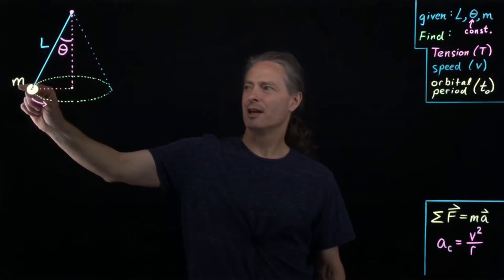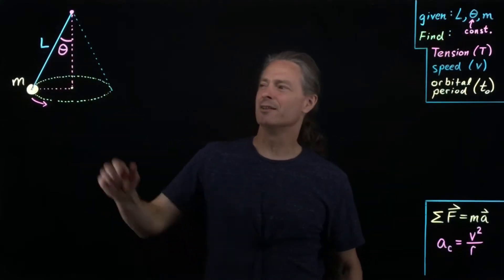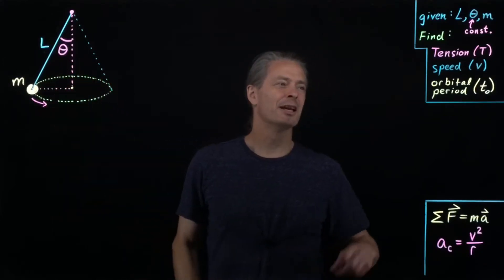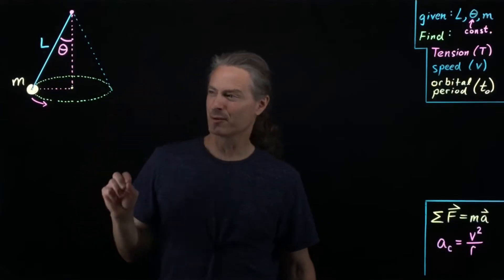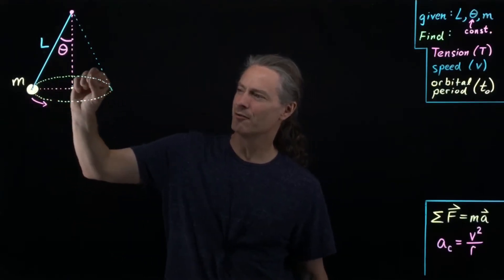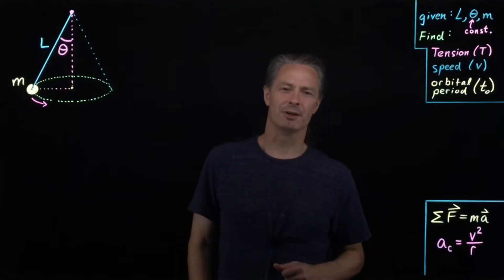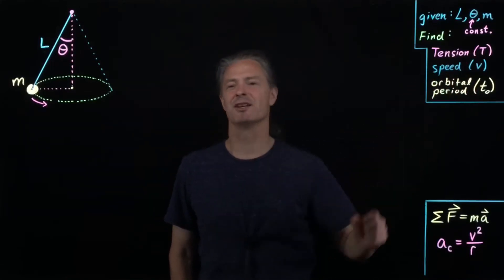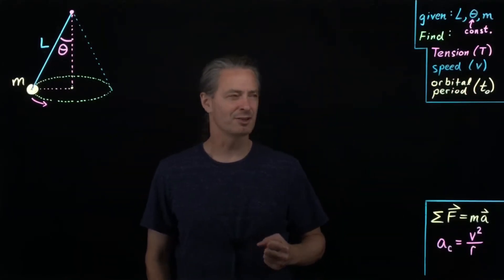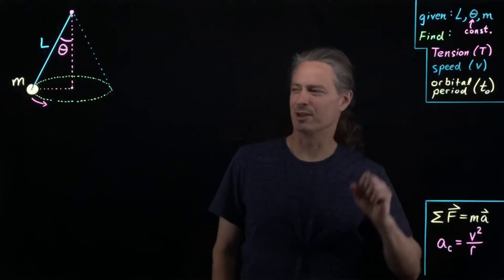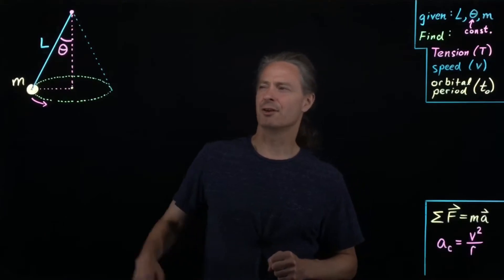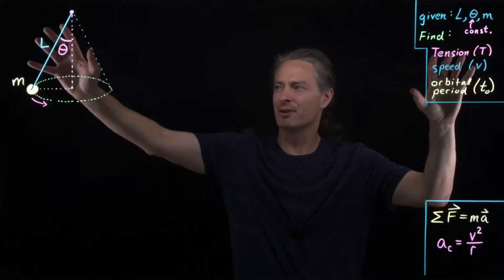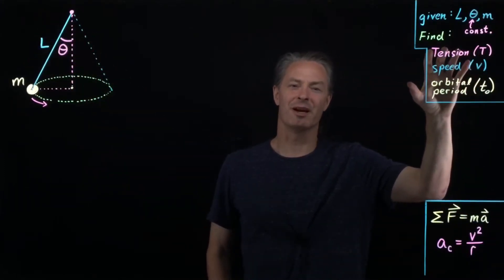Given a conical pendulum with hanging mass m, string length L from the fixed point to the center of mass, and angle theta, we're asked to find the tension in the string, the speed of the mass in the circular path, and the orbital period — the time for one full circle. Period is often represented by capital T, but I'll use capital T for tension, so I'll use little t-sub-o for orbital period. Since our given information is in symbols, our results will be in terms of those symbols and physical or mathematical constants.